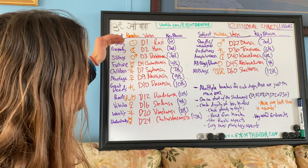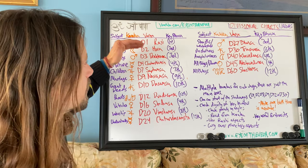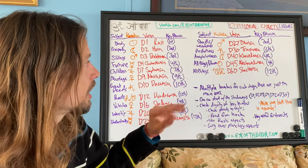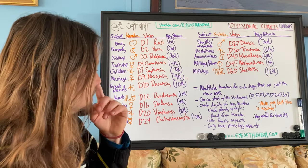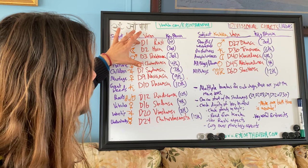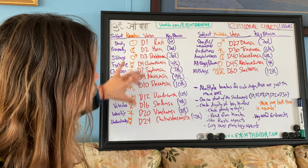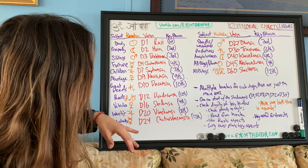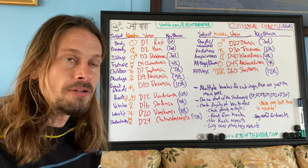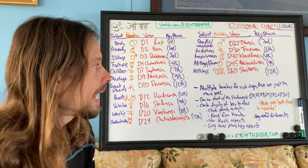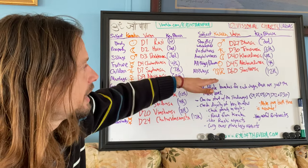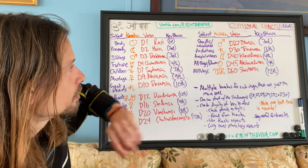So how do you use Vargas? These are called the Shodasa Vargas — Shodasa meaning 16. There is the Rashi Varga and 15 others, and each deals with a specific area of life. The further you go in the Vargas, the finer they get and the more quickly they change.